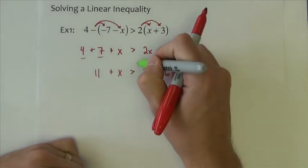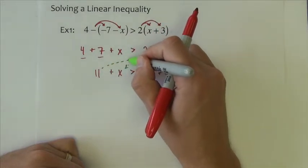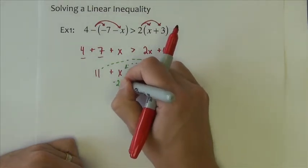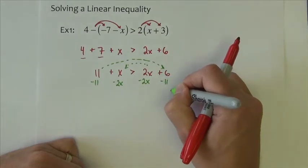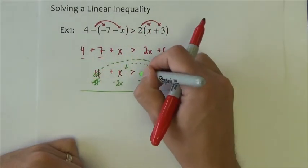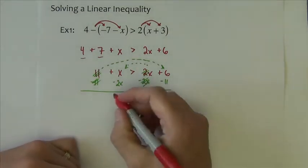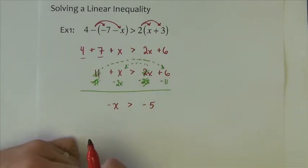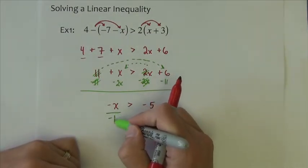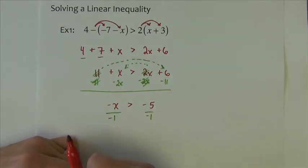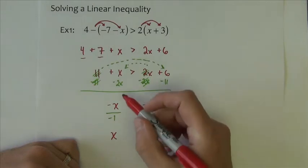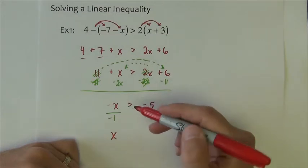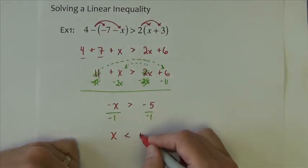So now I'm going to bring the x's onto the left. I'm going to bring the numbers onto the right. So I'm going to subtract 2x from both sides, subtract 11 from both sides. The result is negative x is greater than negative 5. I need to divide by the negative sign, which is really the number negative 1. And here's where I have to be careful with my inequalities. Anytime I multiply or divide by a negative number, the inequality direction flips. So the greater than becomes less than 5.